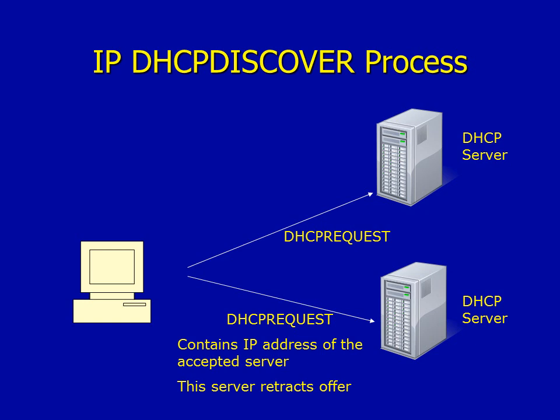The client then responds with another broadcast message called a DHCP Request. It's broadcast to all servers because the client has decided to pick an IP address from the top server. Broadcasting this DHCP Request lets the other DHCP servers know to withdraw or retract their offers. The top DHCP server then sends back a DHCP ACK — a DHCP Acknowledgement — and at this stage the client is up and running with its IP address.